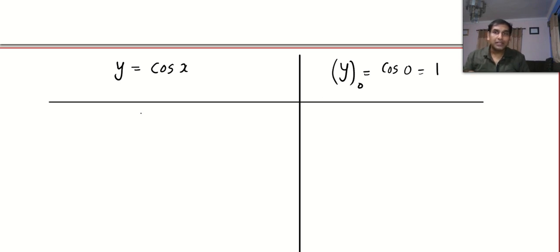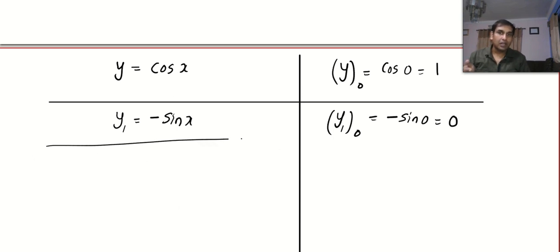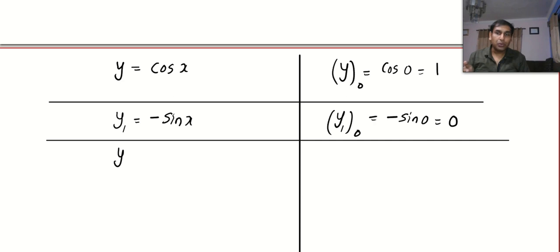Now, find y1. y1 = −sin x, the derivative. y1 at 0 is the value of the derivative when x = 0, so that will be −sin 0 = 0. Now y2, the second derivative, is −cos x. So y2 at 0 means −cos 0, that is −1.